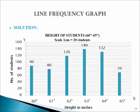On the x-axis we have taken height in inches and on the y-axis we have taken number of students. In this particular diagram, frequencies are plotted in the form of blue vertical straight lines. As we can see, at 60 inches there are 90 students, at 61 inches there are 80 students, at 62 inches there are 120 students, and so on. This is how we will prepare a line frequency graph.